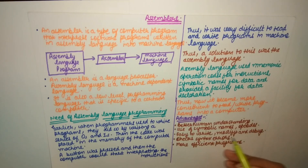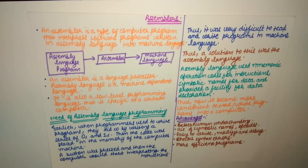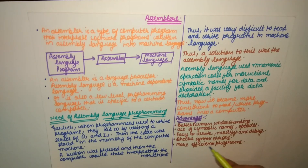The second advantage is use of symbolic names and opcodes, making programs easy to write, modify, and debug. Making changes in zeros and ones was very difficult even for the original author, but now modification is easy. The third advantage is the ability to check syntax errors easily. The last advantage is more efficient programs. These are the five advantages of assemblers.